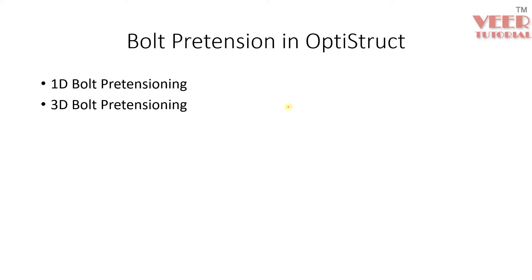In this lecture we will learn how to apply the pretension loading in OptiStruct. There are two ways of applying the pretension loading. We can create the bolt by two methods: 1D bolt or 3D bolt. In OptiStruct, there is a different way of applying the pretension load for 1D bolt and a different method for 3D bolt. We are going to learn about both, one by one.